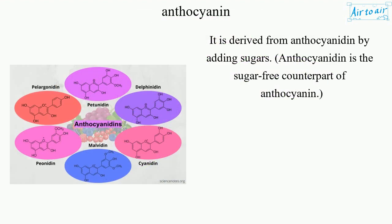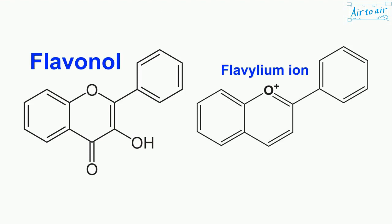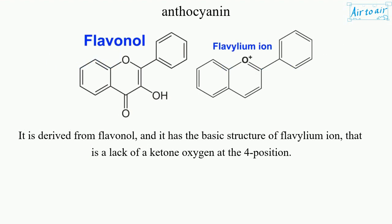Anthocyanidin is derived from anthocyanin by the removal of sugars, making it the sugar-free counterpart. It is derived from flavonol and has the basic structure of the flavilium ion, which lacks a ketone oxygen at the four position.